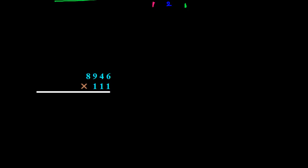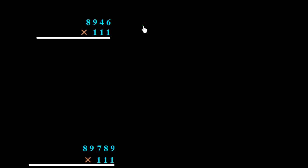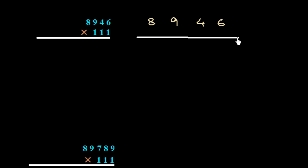Now one more example. We have the number 8946 and we draw a line under it. We start by writing 6 first, then adding 6 plus 4 to get 10 — writing 0 with 1 carry.